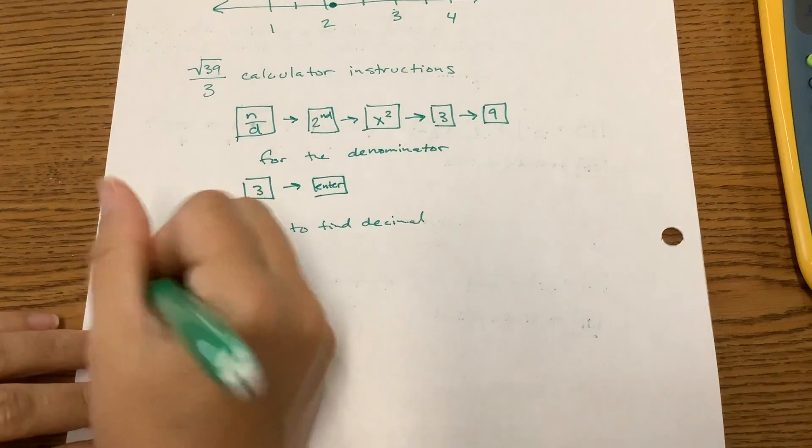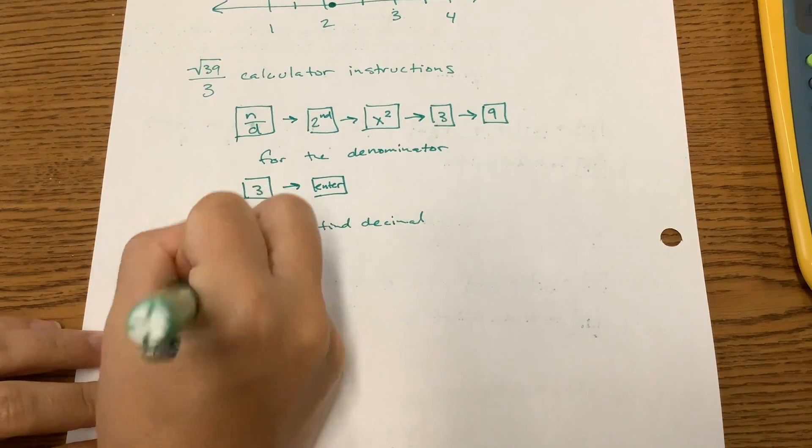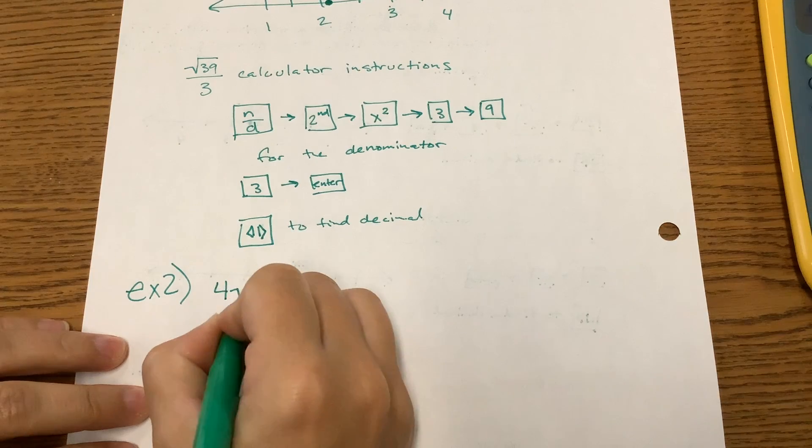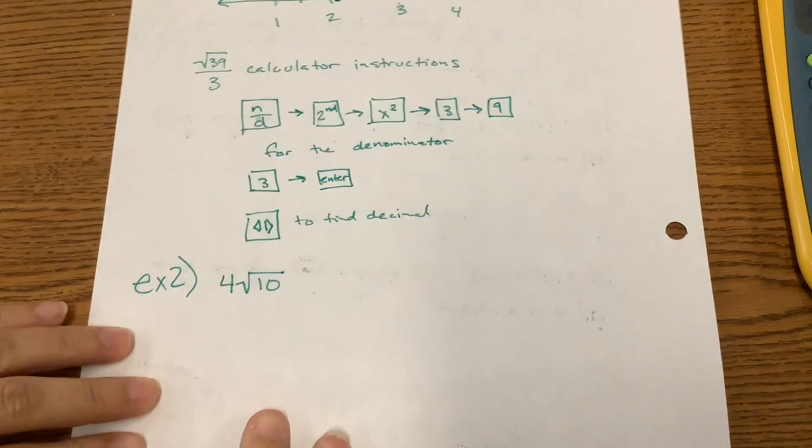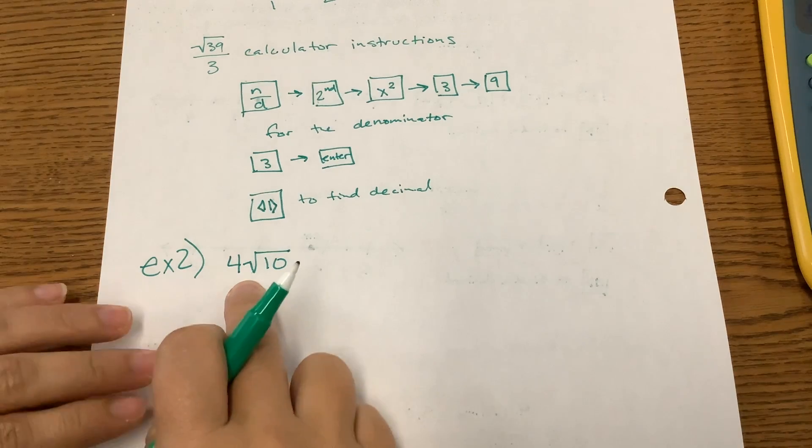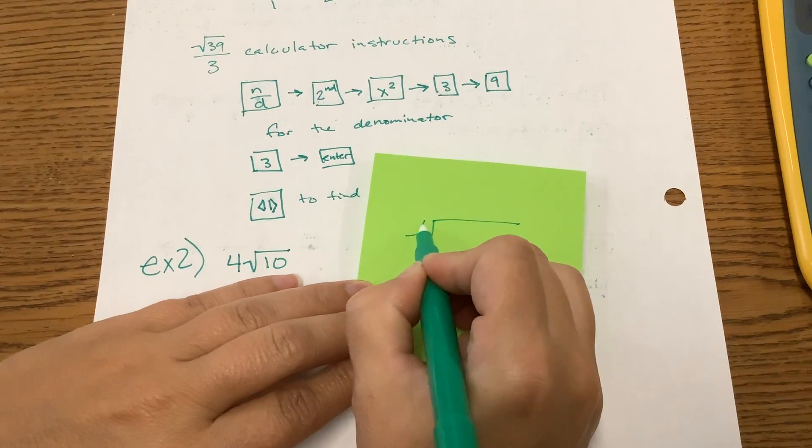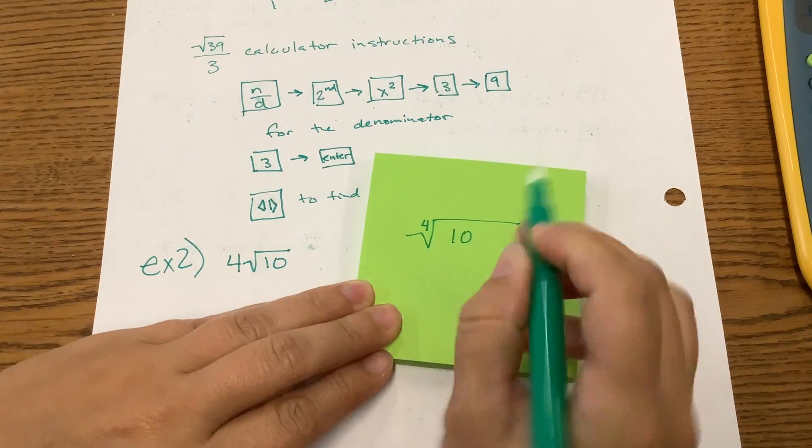Let's go ahead and do one more example. So example 2, we're going to look at 4 root 10. This is not a 4th root. If it were a 4th root, it would look like the 4 would be on top of that radical like this. So this is the 4th root.